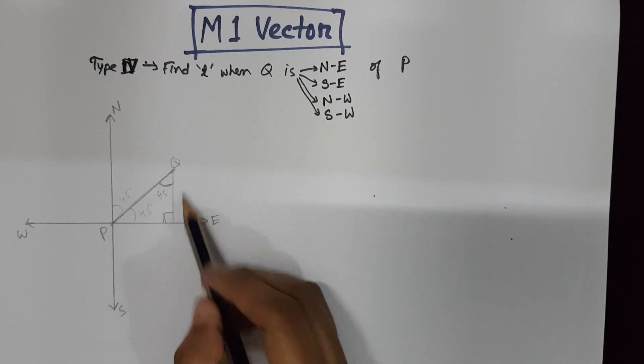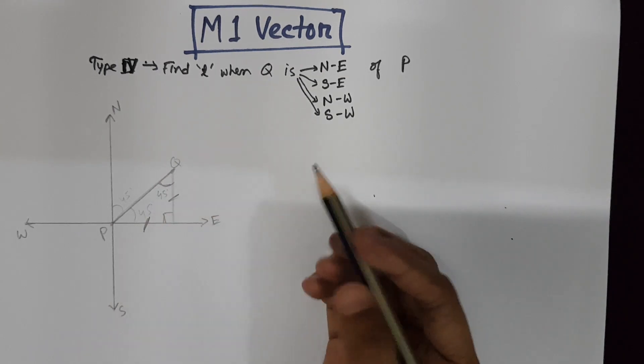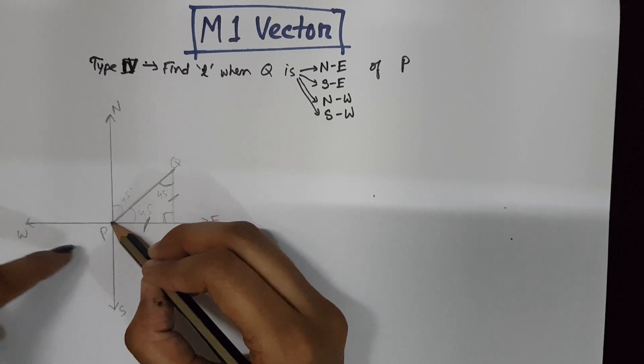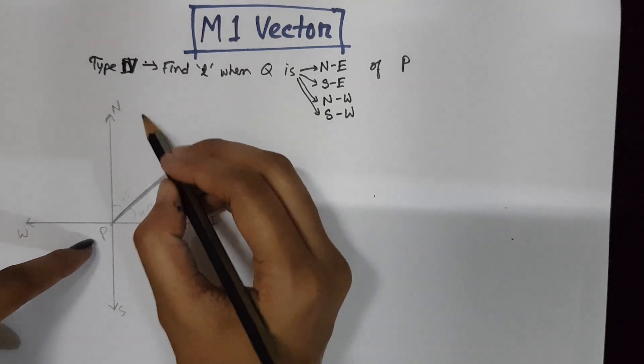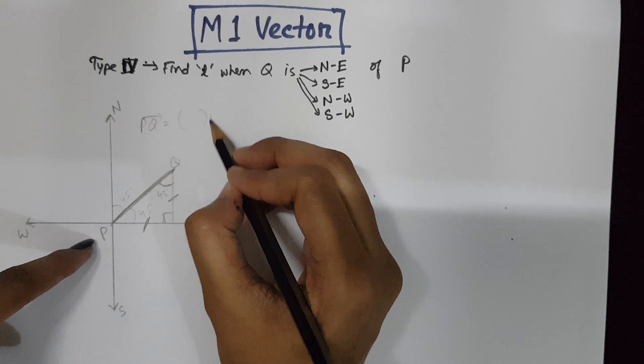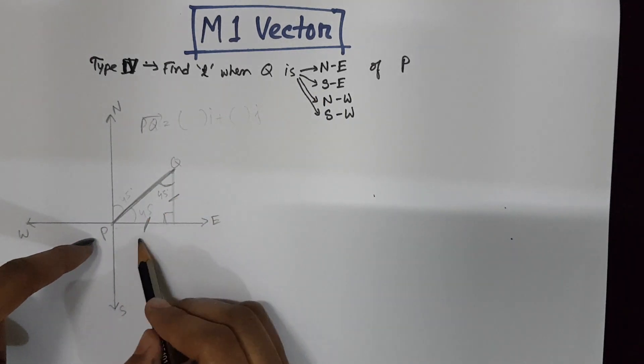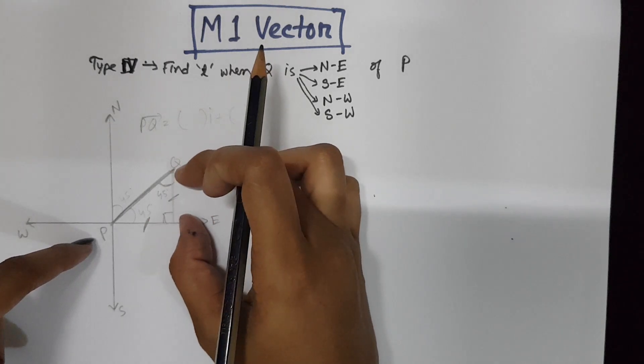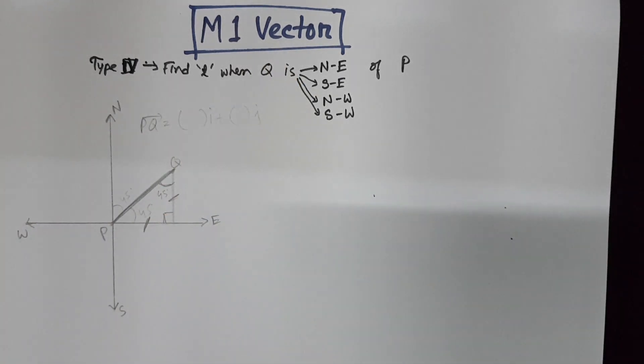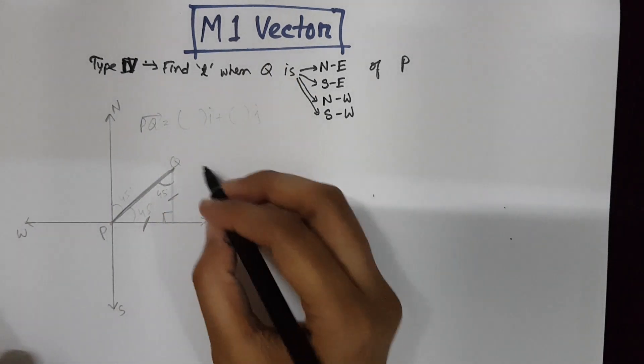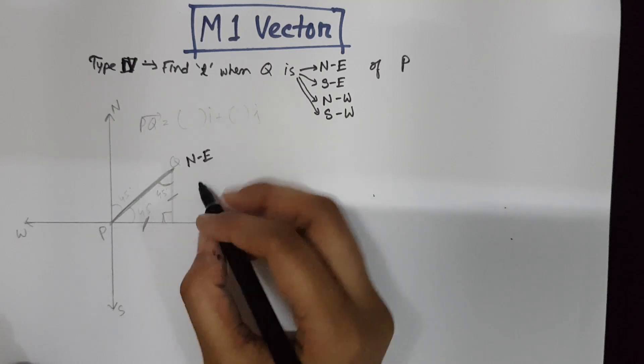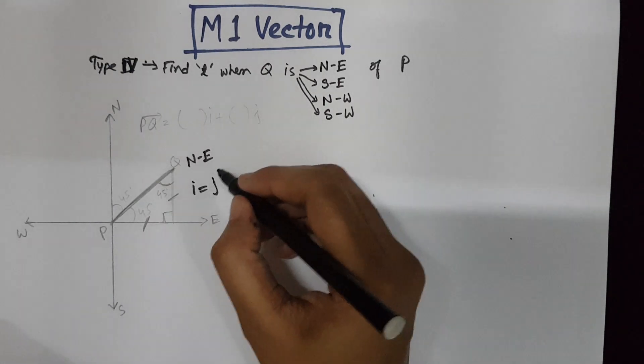Since this is an isosceles triangle, these two sides will be equal. If we have the equation of PQ, the vector equation of PQ, that is something I, something J format, then the I coordinate here will be equal to the J coordinate, since the distance is equal. So if it's north-east, then the I coordinate equals the J coordinate.